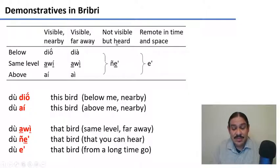There's a couple of demonstrators for things that are not visible, but I can hear. So DuÑe is that bird that you can't see, but you can hear that it's somewhere over there.